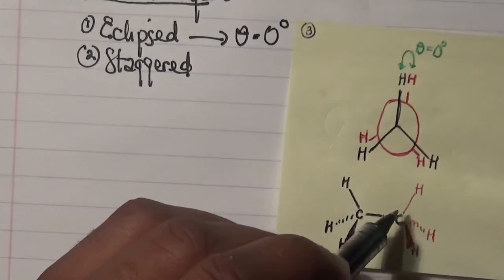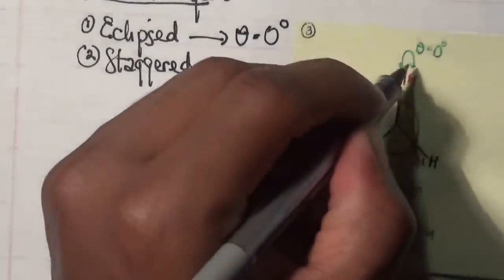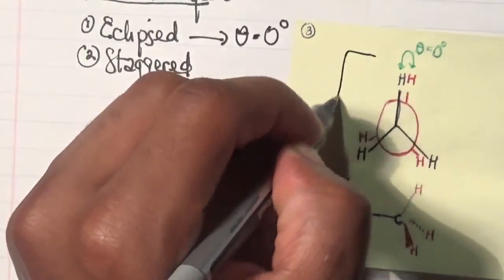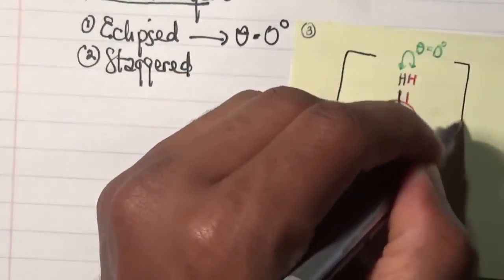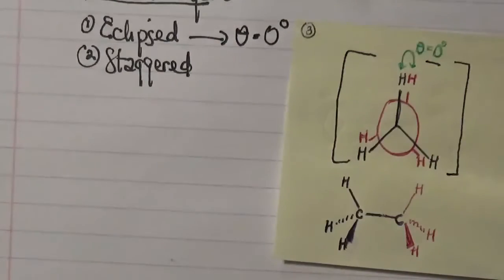So both hydrogen atoms are both pointing upwards. In this case, forming an angle of zero degrees looking at it from the Newman projection perspective, which is this diagram over here. This is zero degrees.